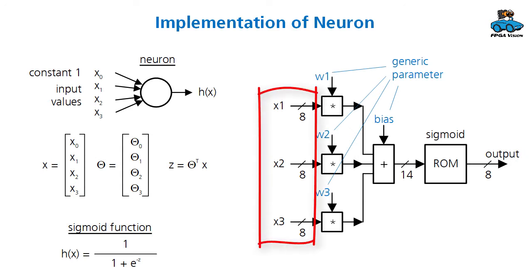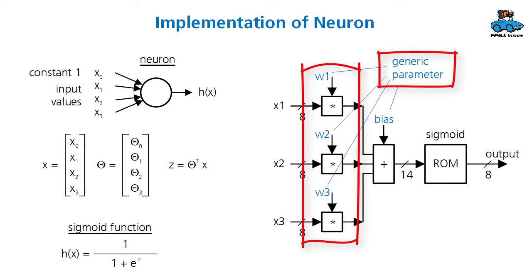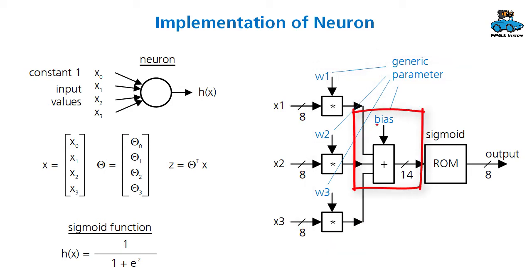Here we have the inputs x1 to x3 with 8 bit. Then we have generic parameters for the multiplication w1 to w3. We add them together and we also add the bias. Then we get a value where we choose 14 bit as a word width. This goes into a ROM where we have stored the sigmoid function. As the output again, we use 8 bit.